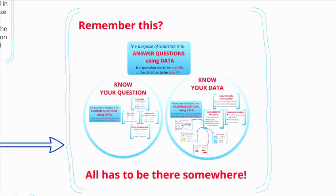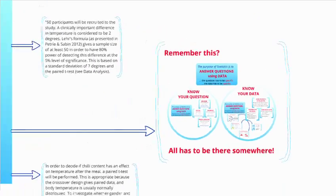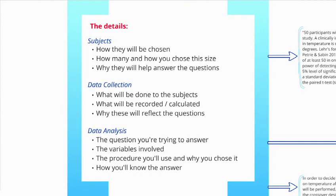In particular, you need to mention what the question is, what the variables are doing, and whether there's repeated measures or not. When you talk about the subjects, you need to talk about how they will be chosen, how many of them, and why they will help to answer the questions. You want to mention if things are chosen randomly and why the people you've chosen are representative of the population you're trying to discuss — or why the animal model you're using is appropriate.